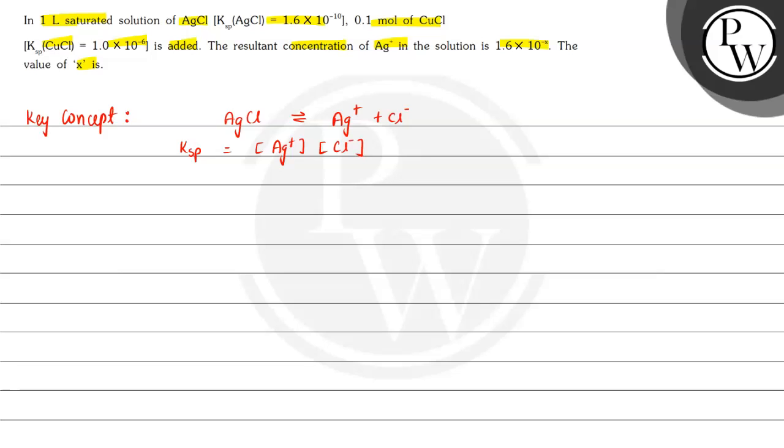So here, molar solubility for Cl- will be equal to Ksp. Here Ksp value in this case is given as 1.6 × 10^-10 divided by concentration of Ag+. We will mark this as equation 1.